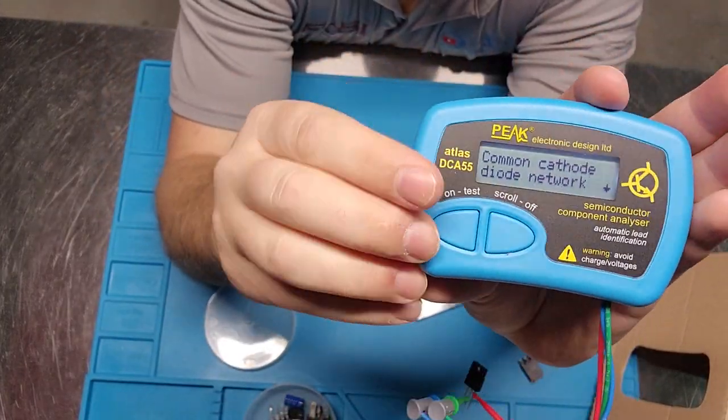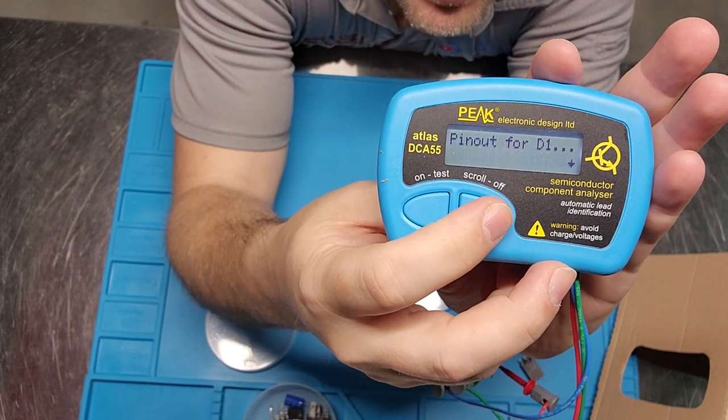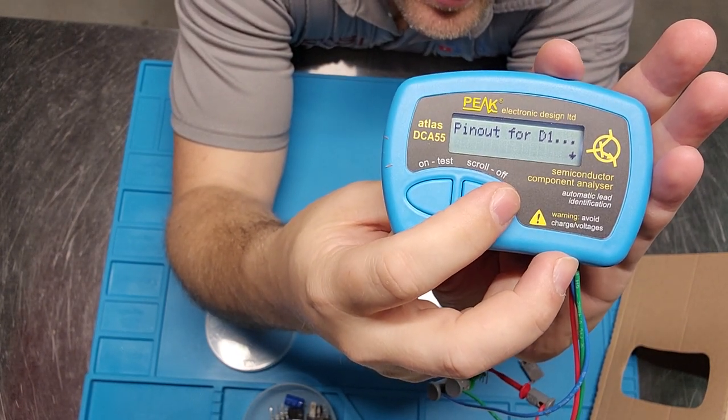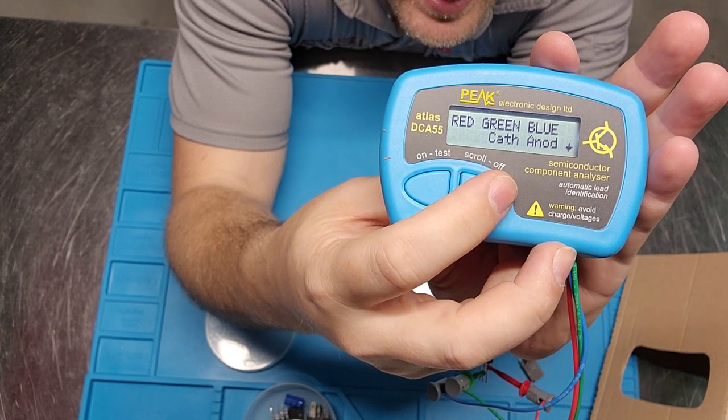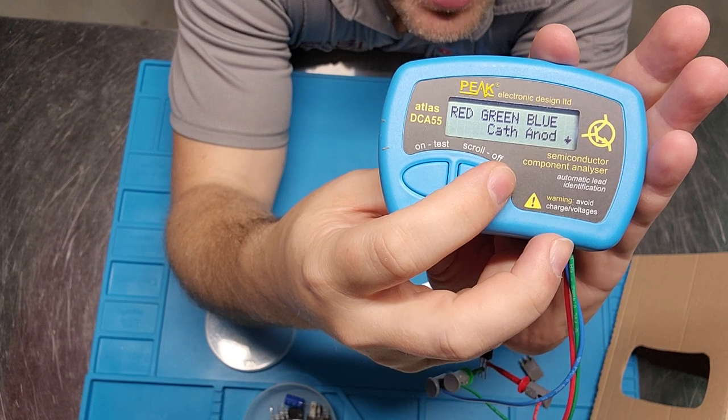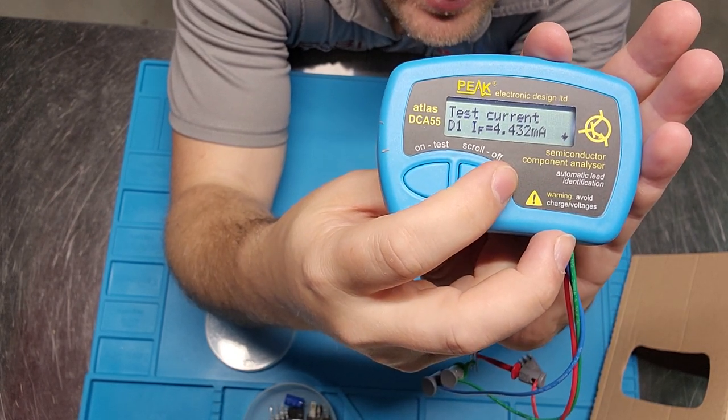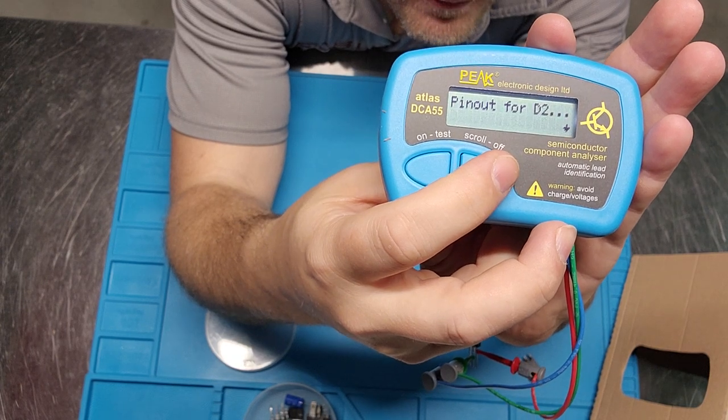Okay. So the cool thing is it says common cathode. But then when you hit this button here, it then gives you your pin out on which cable is connected to what. So you can see which one's your cathode, which one's your anode. How cool is that? It gives you the stats for your device.